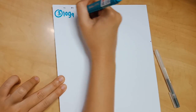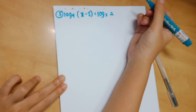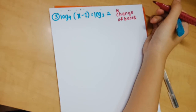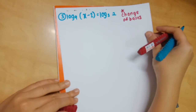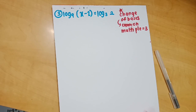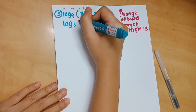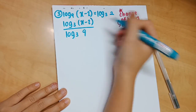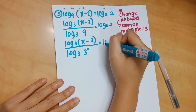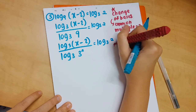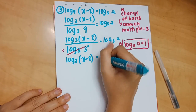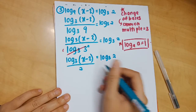The third question involves the change of base. We have log_9(x − 2) = log_3(2). You change everything to a base with a common multiple. Between 9 and 3, the common multiple is 3, so change everything to base 3. That gives: log_3(x − 2) / log_3(9) = log_3(2). Now change 9 to 3 squared, and applying log_a(a) = 1, you simplify to: log_3(x − 2) / 2 = log_3(2). Then bring the 2 over to the other side.